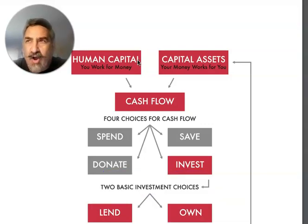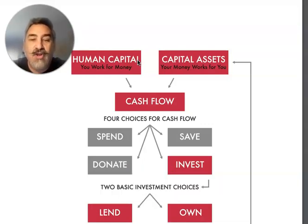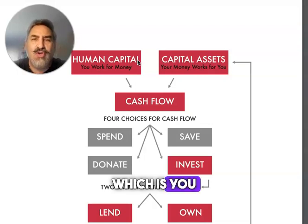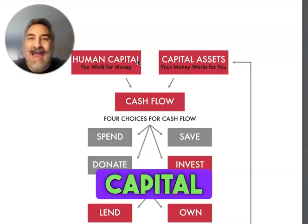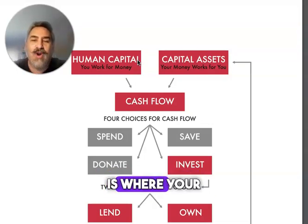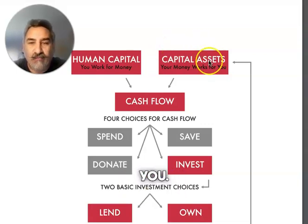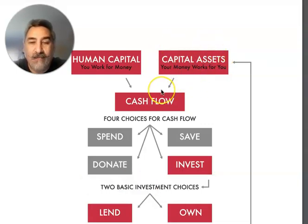The path of money — all money starts from one of these two places: human capital, which is where you work for money, or capital assets, where your money works for you. That's the goal. This is what we want.